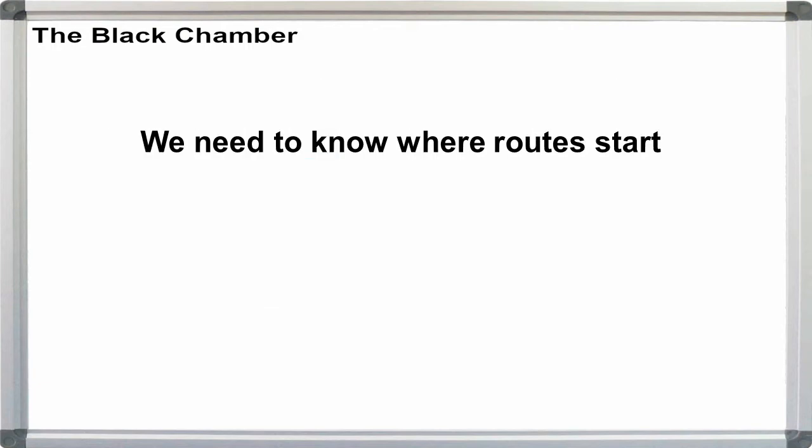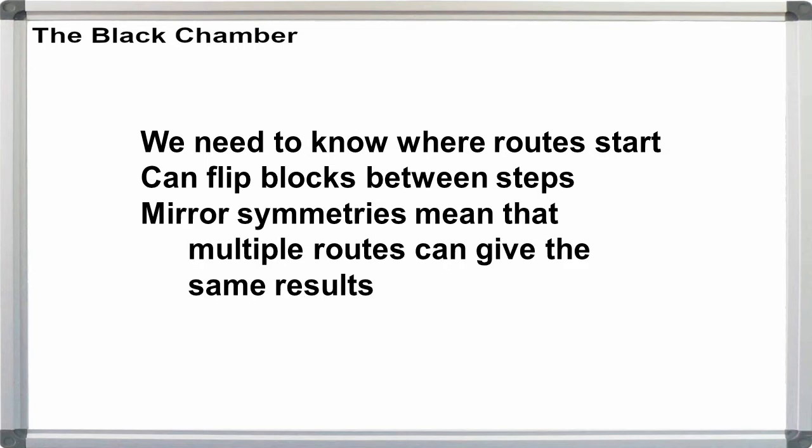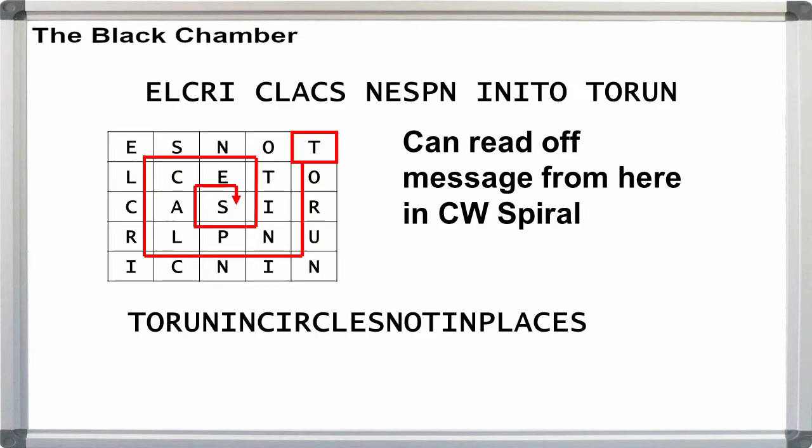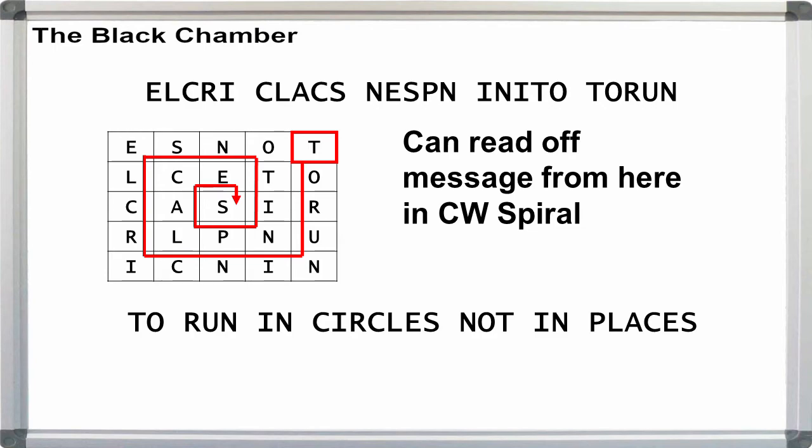The point here is that along with needing to know where the on-by and off-by routes start, we can flip the block left for right or top for bottom between the on-by and off-by routes. And that mirror symmetries mean that more than one pair of routes can give us the same results. Reading our text off with a clockwise spiral, we get to run in circles, not in places.